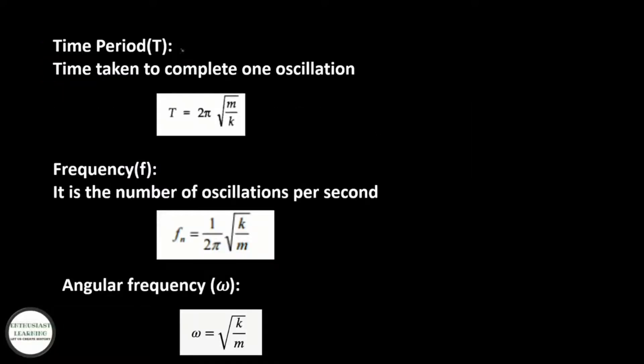Time period T: time taken to complete one oscillation. T = 2π√(m/k). Frequency f: the number of oscillations per second, f = (1/2π)√(k/m). Angular frequency ω = √(k/m).